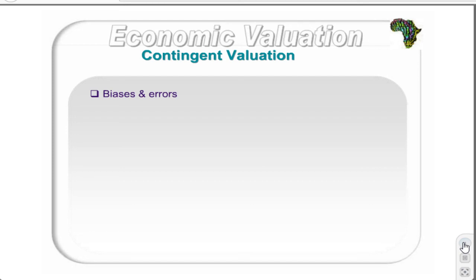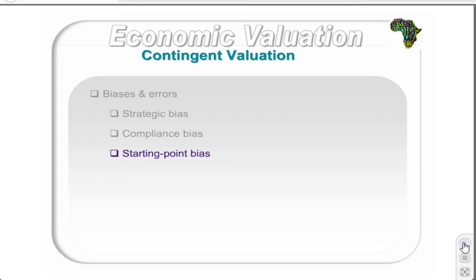Several biases or errors can occur during the survey implementation phase due to individuals providing inaccurate information or miscommunication between the enumerator and respondent. The first is strategic bias, where an individual understates willingness to pay in the hope of a free ride or overstates it to ensure the provision of a public good. The second is compliance bias, where individuals feel it inappropriate to answer certain questions in a certain manner or try to provide answers to please the enumerator. The third bias occurs when a bidding game is played — it avoids distortion from outliers but may incur a starting point bias. Finally, information bias may occur due to a badly designed survey where questions are misinterpreted by respondents.